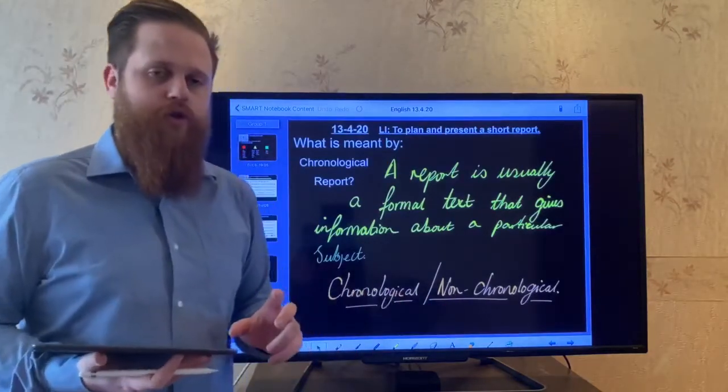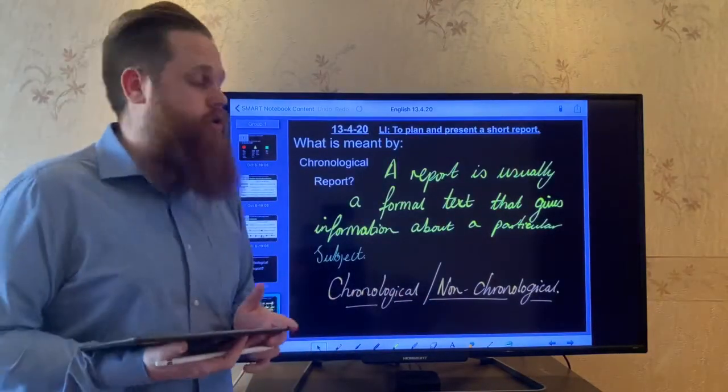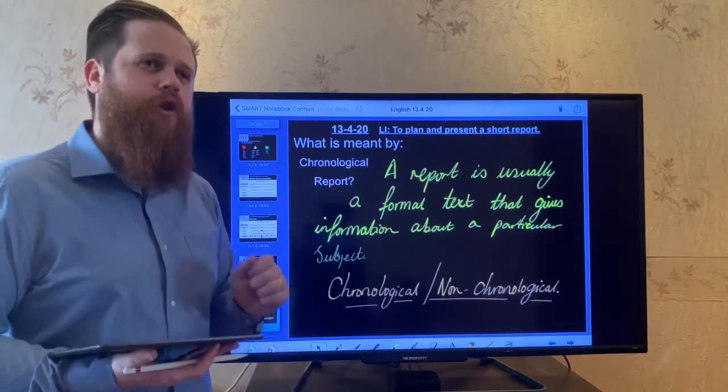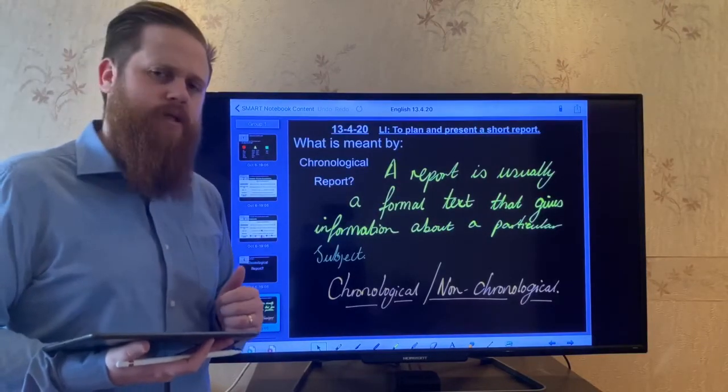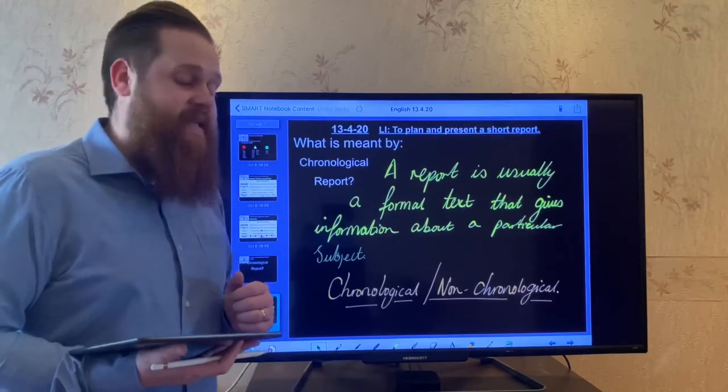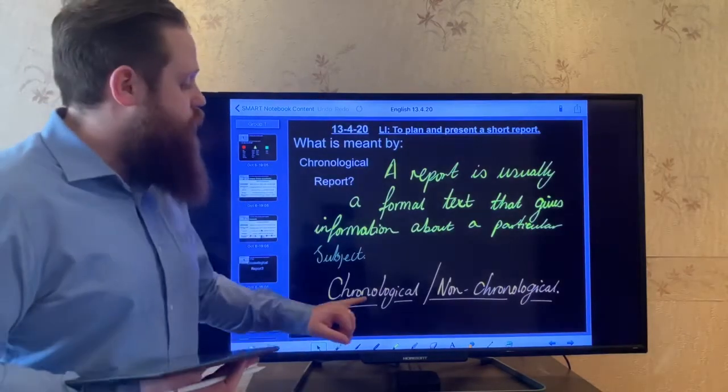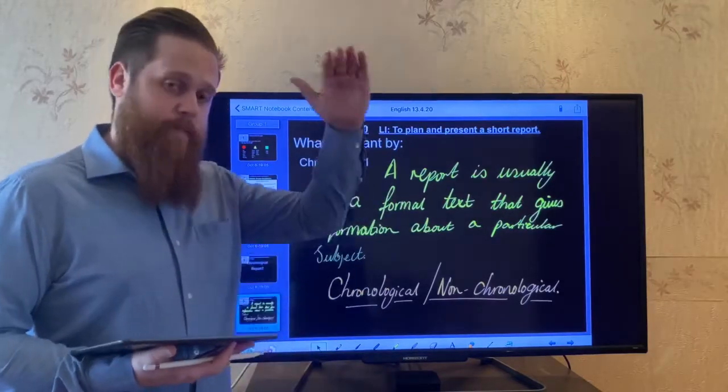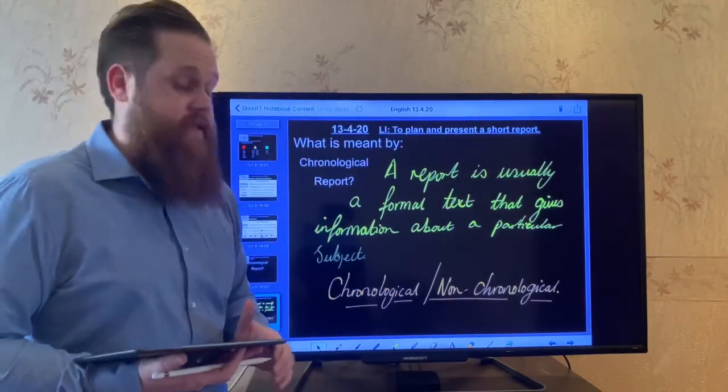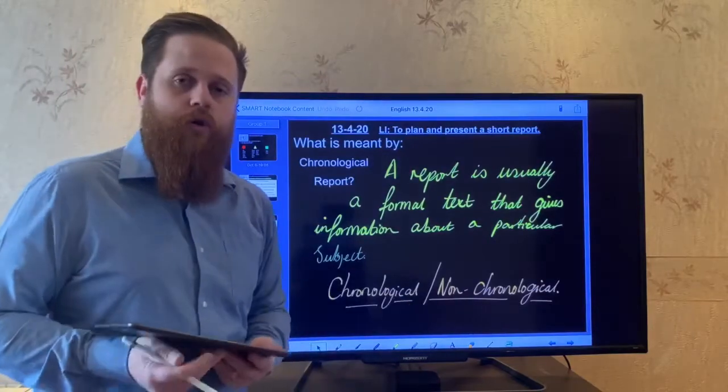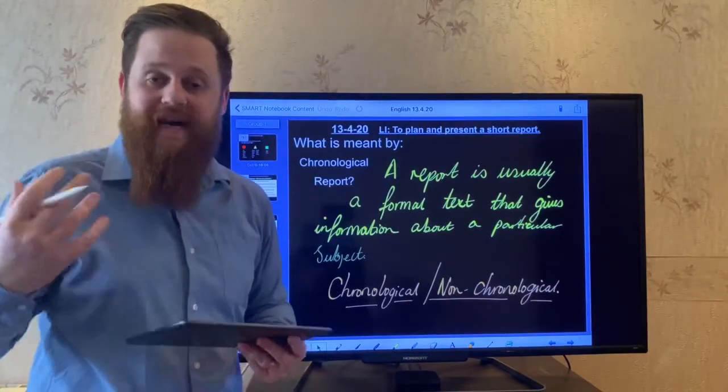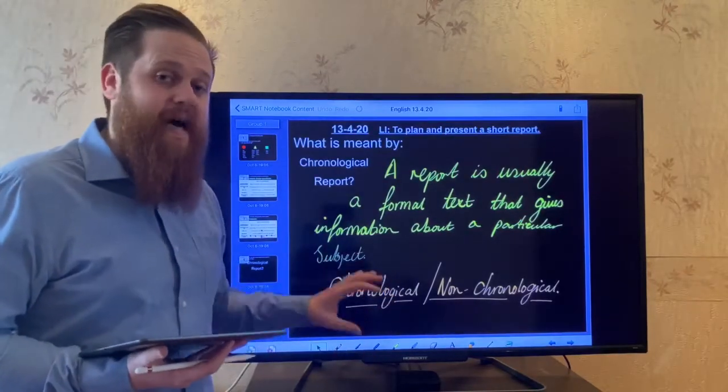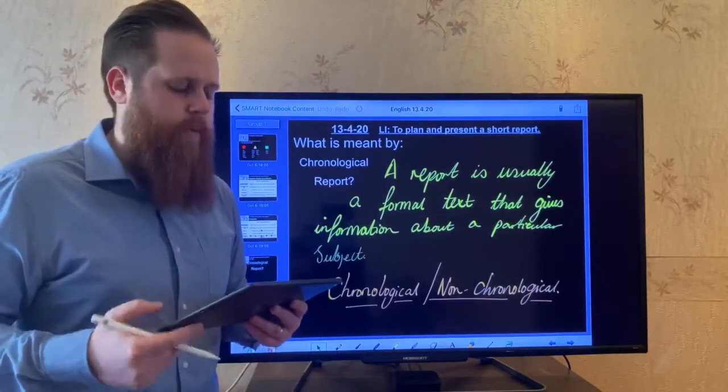Now, chronological and non-chronological. We can have both of these as reports. We're going to be looking at chronological reports. Chronological. Can you remember what that means? It means time. So, chronological reports are in time order. For when it happens, what happens next, then next, and so on, until the end. Non-chronological can be in different order. The time doesn't matter too much. So, we're going to look at reports that are in time order. Chronological reports.